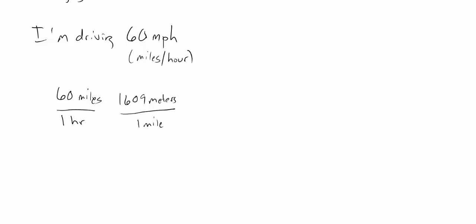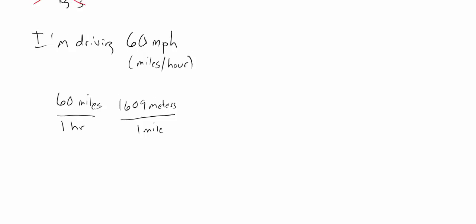It turns out that there are 1609 meters in a mile. This is one thing where Google is really useful. You notice I've put this in a way so that I have miles up at the top here and miles down here, so they can cancel out. We can actually cancel out the units just like we would if we had a two up there and a two down there. So we can cancel out miles and miles.